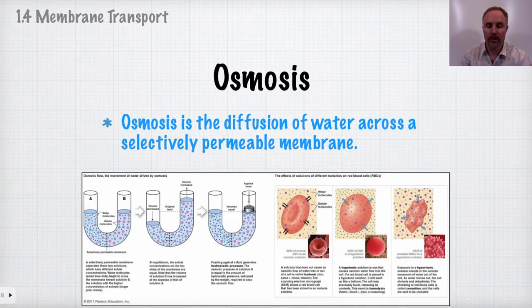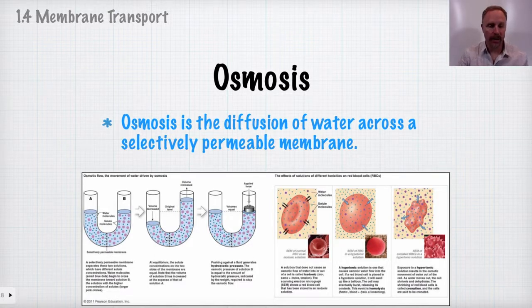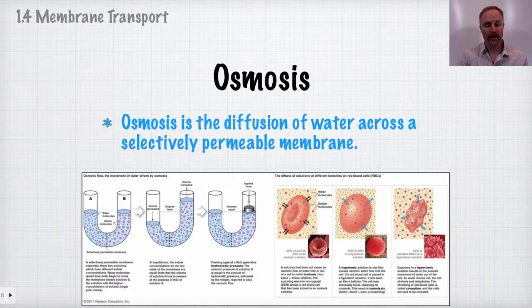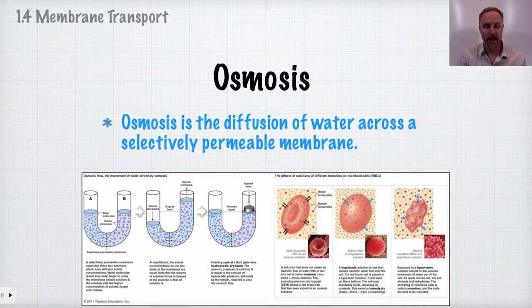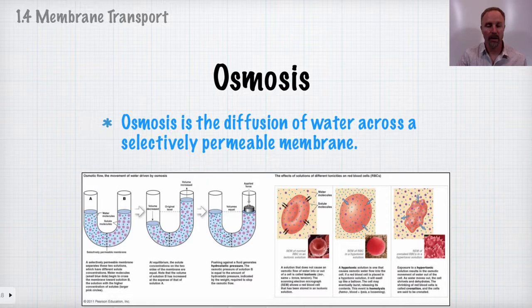Osmosis is simply the diffusion of water across a selectively permeable membrane. Here we can see a semi-permeable membrane that allows water to move but not all particles. There's a more concentrated solution on one side, so water moves across the membrane until equilibrium is reached, resulting in a difference in column height. The pressure needed to prevent this movement is the osmotic pressure; applying enough pressure can force water back to the other side.